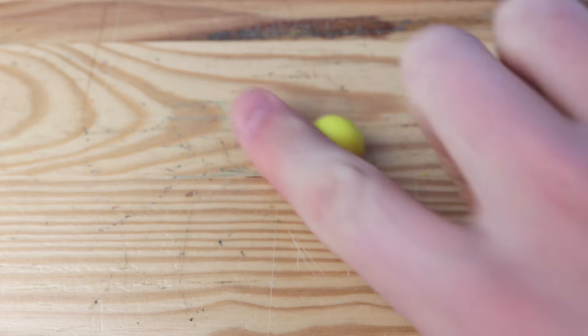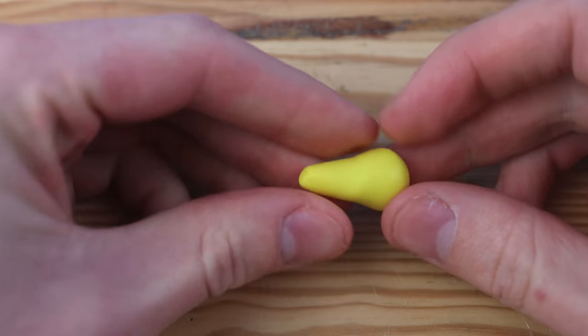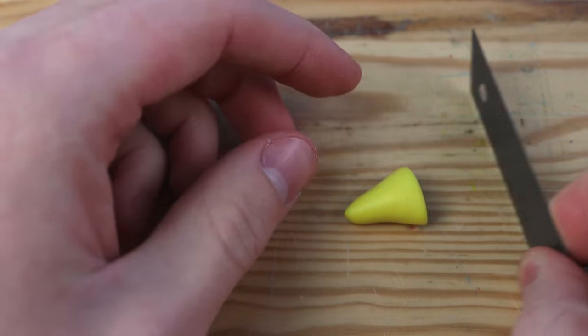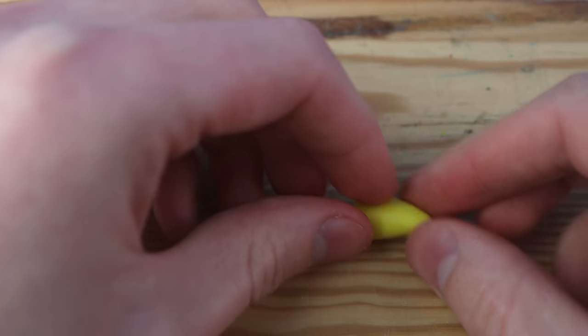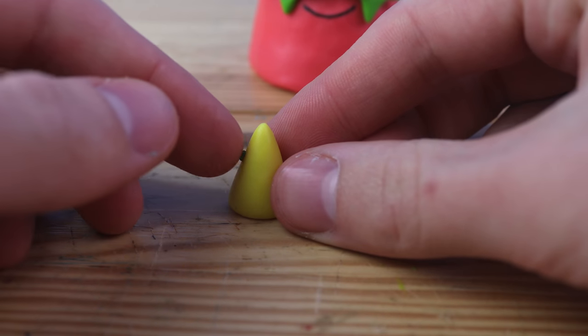I first created a nice little cone for the hat, and I'm cutting off the bottom to make it be able to sit on top of the head. Now we're going to take some green and make some little polka dots all over the hat.